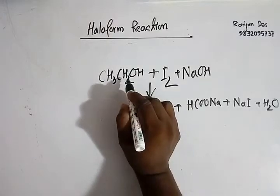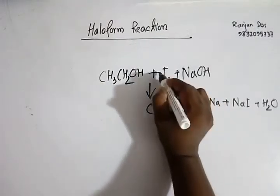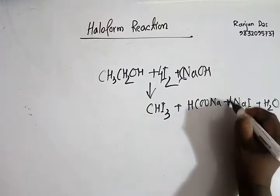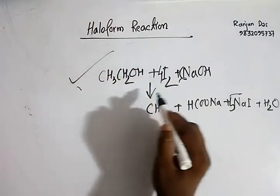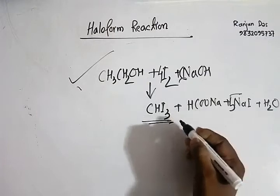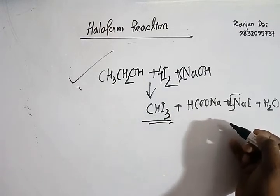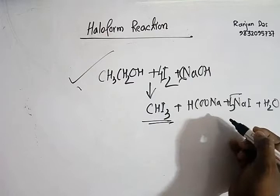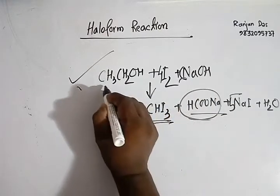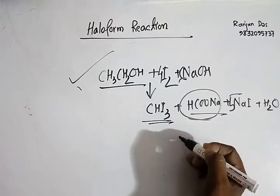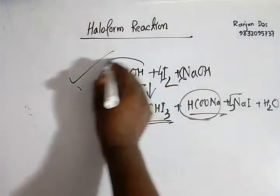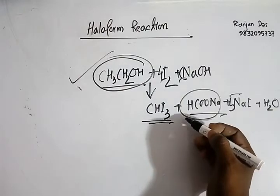So ethanol on reacting with, if I balance the reaction, 4I2 + 6NaOH, the products are this. So ethanol in presence of I2 and NaOH produces iodoform, and if you take Cl2 it will be chloroform. And here I would like to remind you that one salt will form and the salt having one carbon less than that of the alcohol or aldehyde or ketone taken in the haloform reaction.